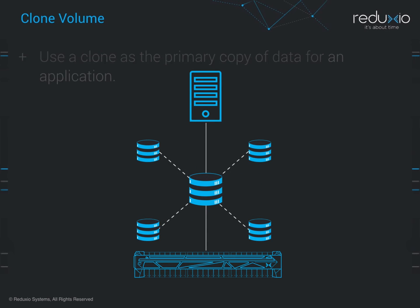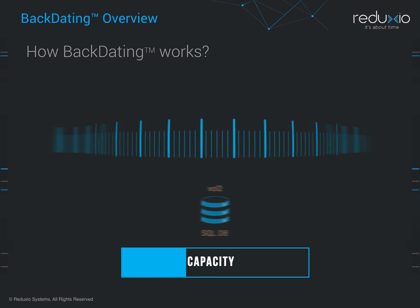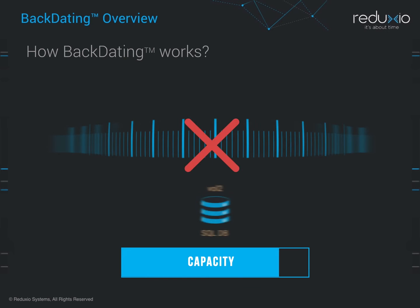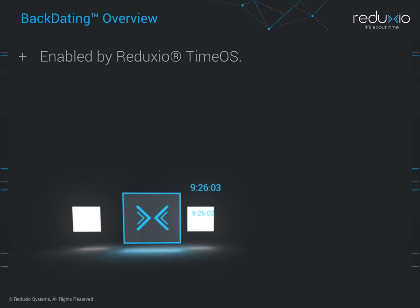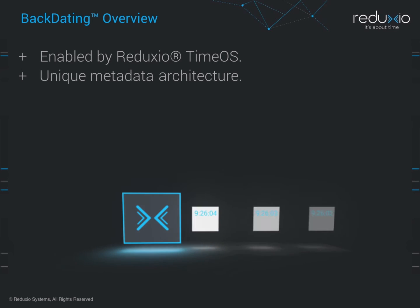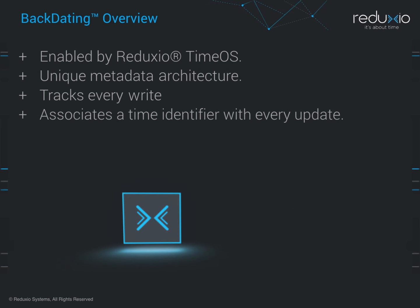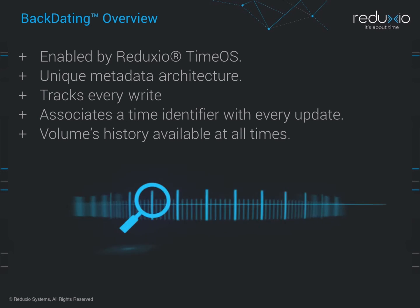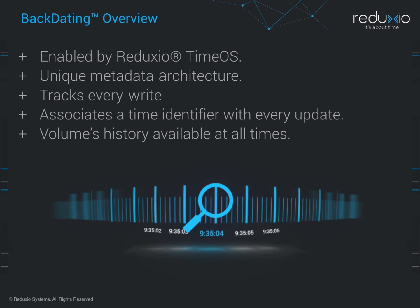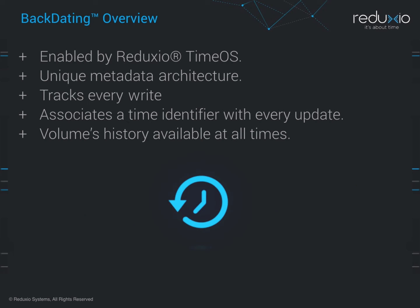Now let's look at how backdating works. Backdating is not implemented by taking a snapshot every second — it just would not work and would be very inefficient. Backdating is enabled by Reduxio's Time OS with its unique metadata architecture that tracks every write to the system and associates a time identifier with every update. This implementation makes the volume's history available at all times, and to retrieve a volume's data from any point in its history just requires querying the Time OS metadata with a relevant timestamp. This is what makes instantaneous access to data from any second in the past possible.